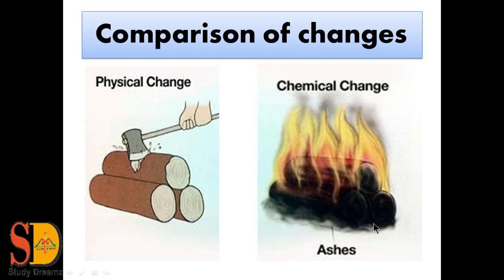Now we have a comparison of physical change and chemical change, using wood as an example. For a physical change, when we cut this wood, the shape and size of the wood get changed, but the property remains the same. While when we burn this wood, it completely changes into ash, and the property of ash and wood are completely different — we get ash as a new substance. So this is all about physical change and chemical change.